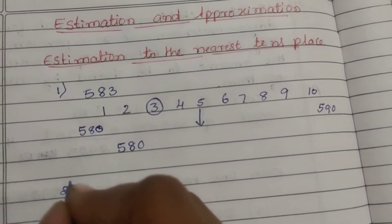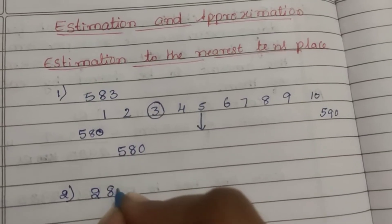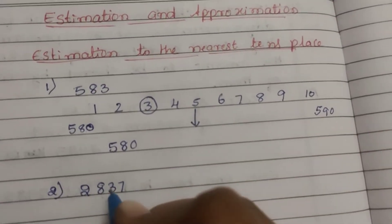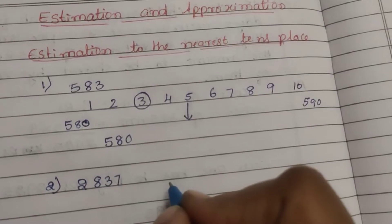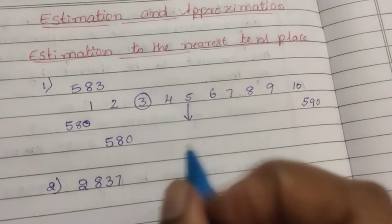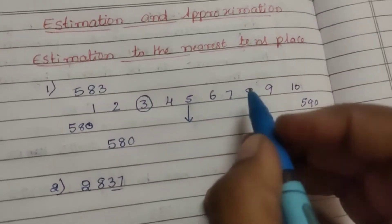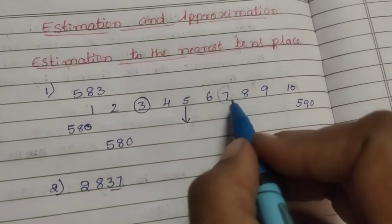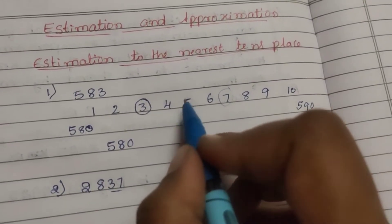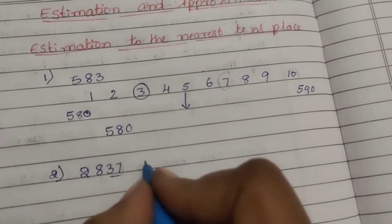This is the first example. The second example is 2,837. This is the nearest number. For example, nearest 10th place. This number is 37. This is the same number — 7, 80, 100, nearby. The second number is 5. How do you reduce the number?